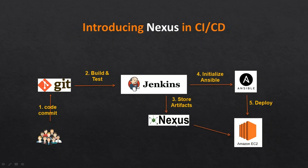Once you are comfortable with that setup, we are going to introduce Nexus. Nexus is an artifacts repository — whatever build happens, those build artifacts will be stored on Nexus. At that point, Ansible can communicate with Nexus, retrieve the artifact, and deploy it into the EC2 instance.